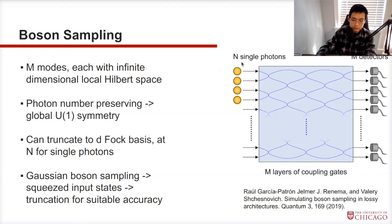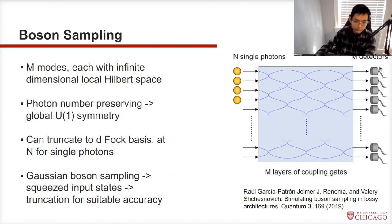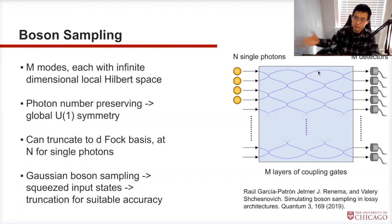Now we move on to the experimental setup of boson sampling. We put N single photons into an array of beam splitters — the interferometer — and have M detectors at the end to count how many photons come out of each port. For a photon from the top port to reach the bottom, you need at least M layers. At any single detector there can be at most N photons, so the local Hilbert space has dimension N at each detector. The unitary transformation in the interferometer preserves the total photon number.